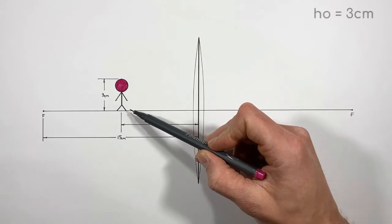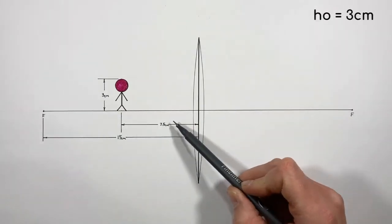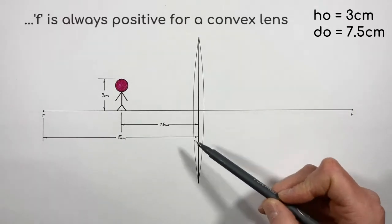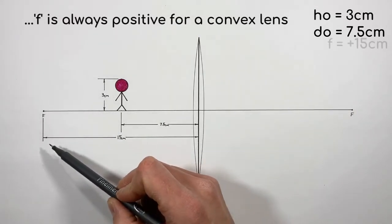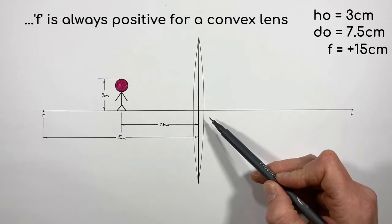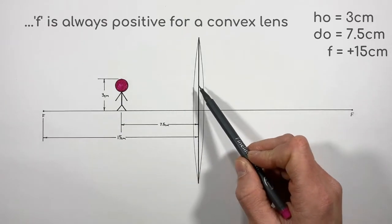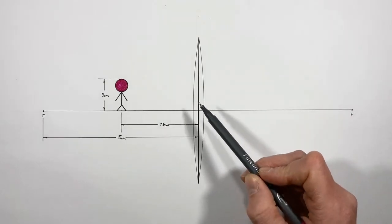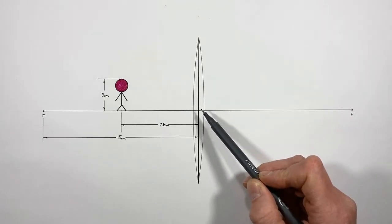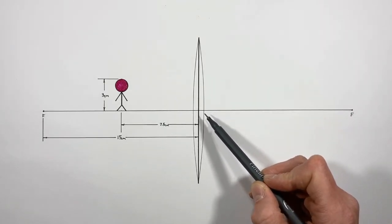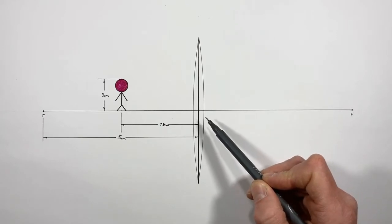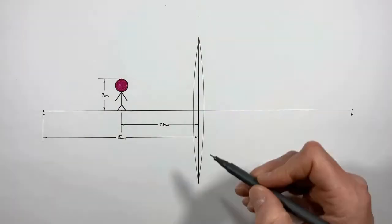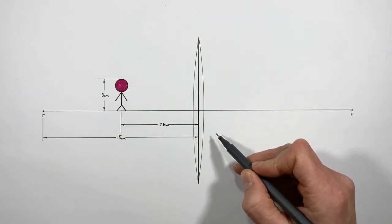In this problem we have a three centimeter tall object which has been placed 7.5 centimeters in front of a convex lens which has a focal length of 15 centimeters. First, we're going to draw a ray tracing diagram for this object in front of this lens to determine where the image will appear, and then we're going to use the thin lens equation to determine the image distance, magnification, and image height.